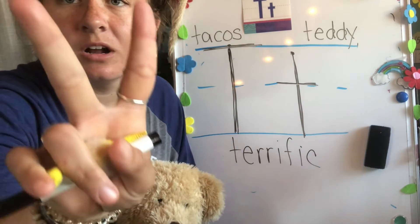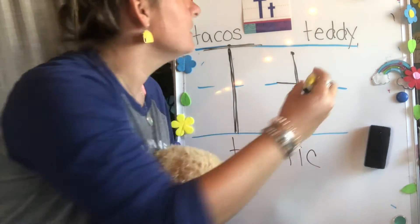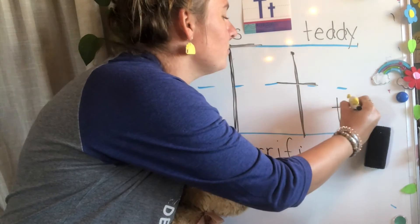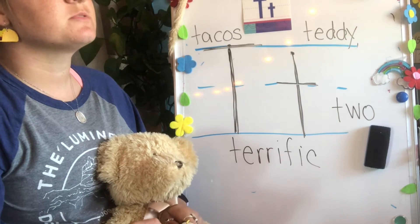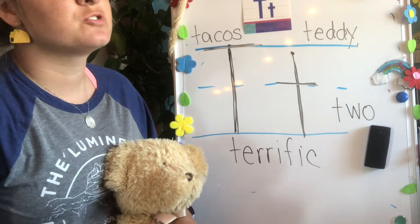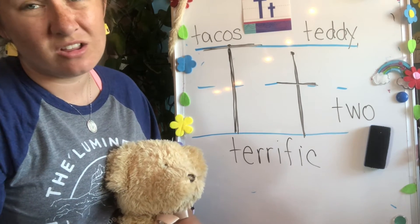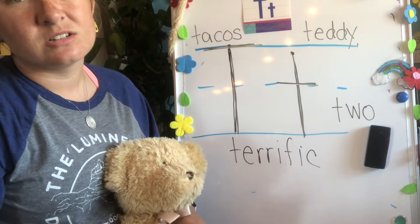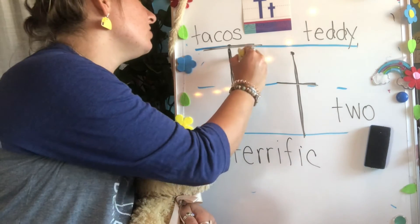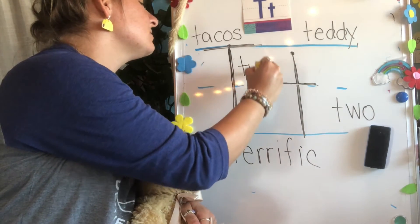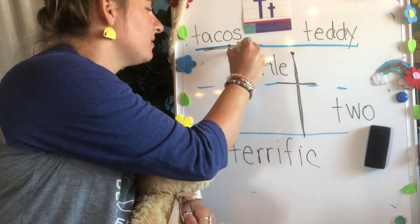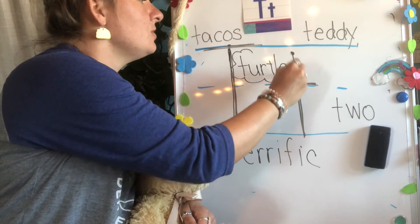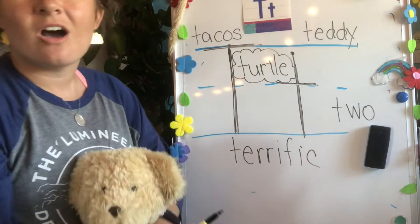What about the number two? T, t, two. Last but not least, what animal is green and has a hard shell? T, t, turtle. T, t, turtle. We are going to be learning about turtles today. Awesome.